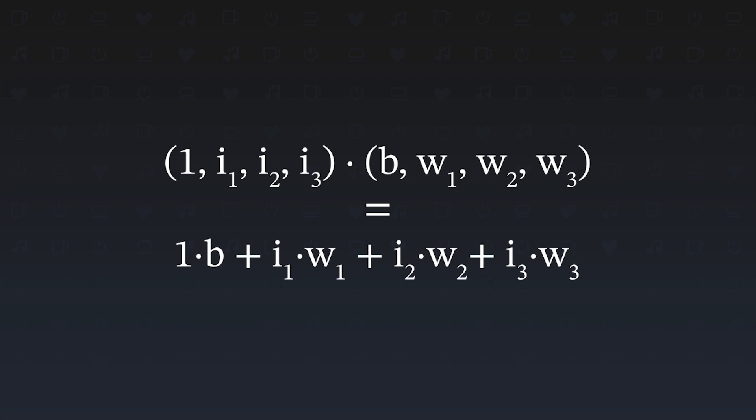A simple trick is just to add 1 to the start of the inputs and squeeze the bias into the weights. Like this, there is a 1 times bias inside our sum, and that's what we need. Now we stuff all of this into an activation function and like this we get a full-fledged neuron again — but this time with vectors.